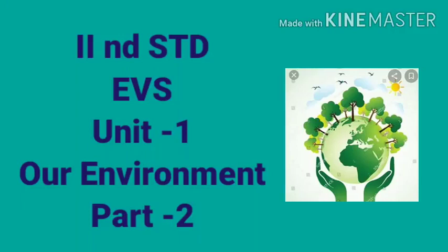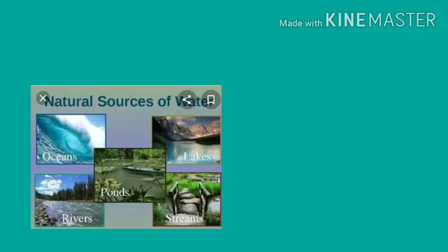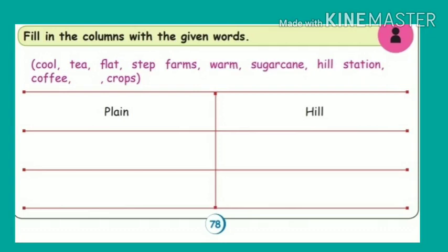Welcome children. This video is about second standard EVS Unit 1, Our Environment, Part 2. In the last session we saw about environment and different landscapes like forests, plains, and hills. In this session we are going to see about types of water bodies — that is pond, river, and sea — and finally about desert. Take page number 78.